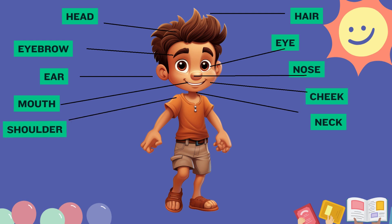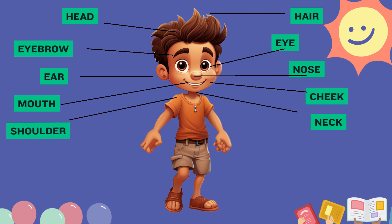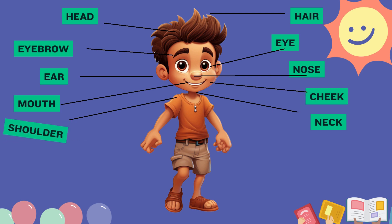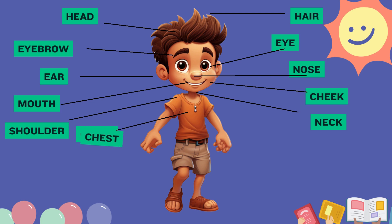Shoulder. The main function of the human shoulder is to allow the human arms to rotate and move around in different directions. Chest. Chest holds many of the structures needed for living.